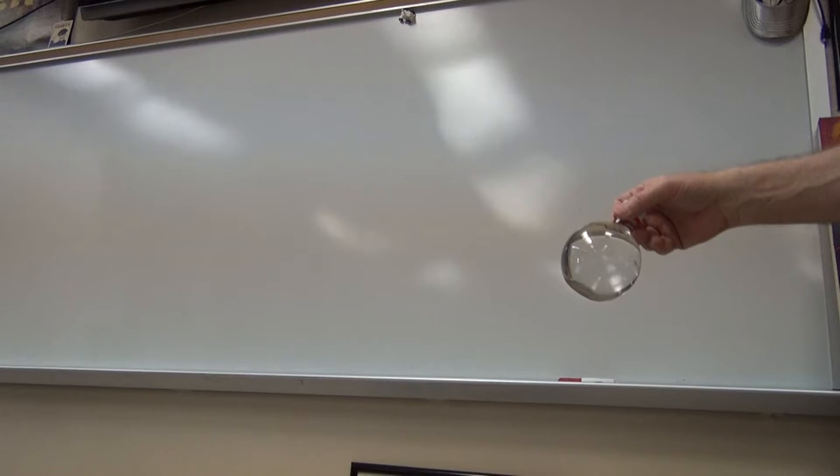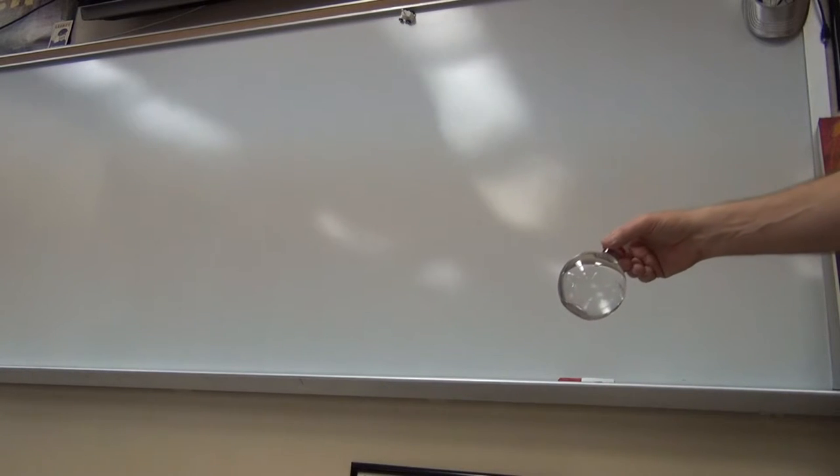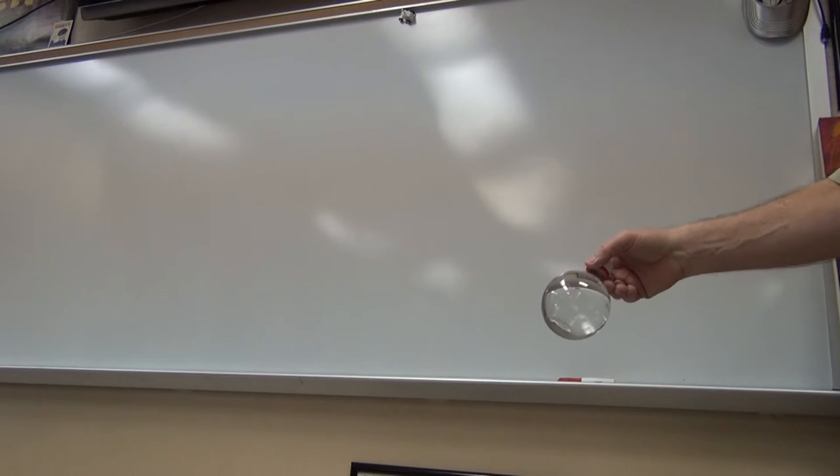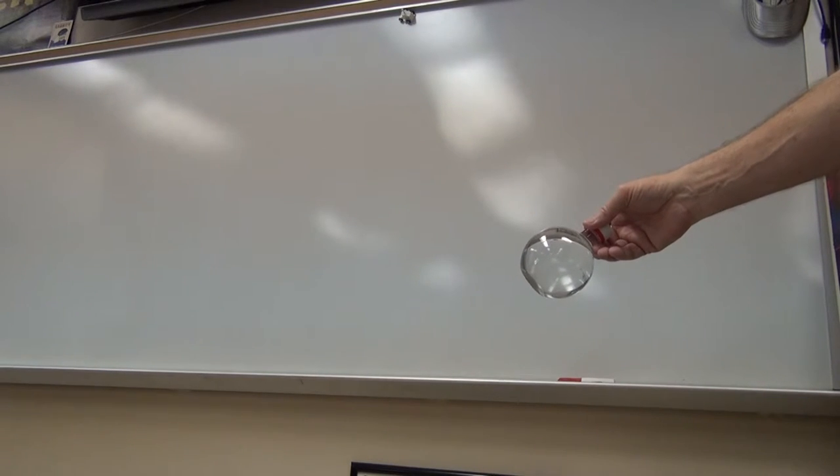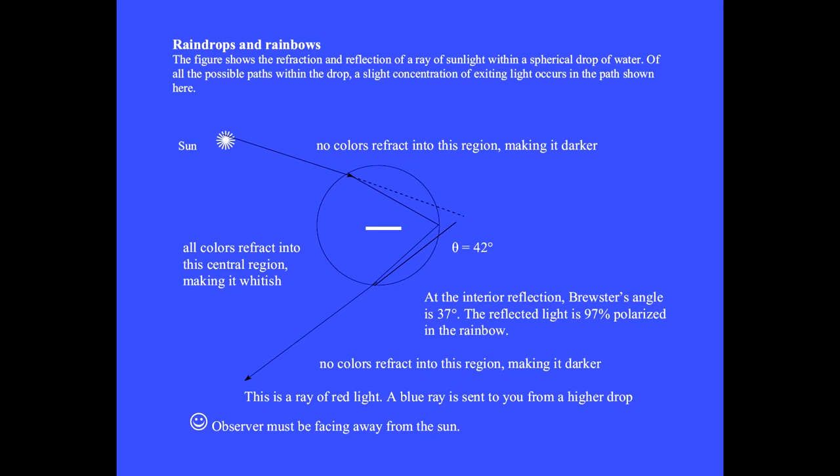This spherical container is filled with water. We'll use it to create a rainbow. Light from the sun hits this raindrop. A small but visible portion of that light refracts once at this surface, reflects at the back, refracts again at this surface, and passes into your eye.